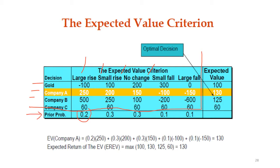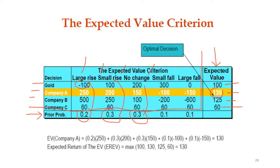To compute the expected value, we multiply each probability by the corresponding payoff and make a summation for each alternative. The expected values for all alternatives were found to be 100, 130, 125, and 160. Once we compute the expected value column, the maximum value is the optimal decision.